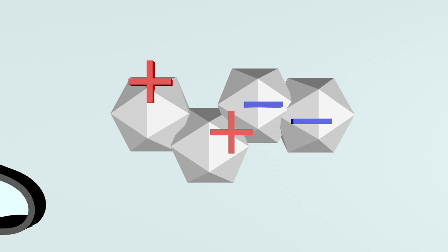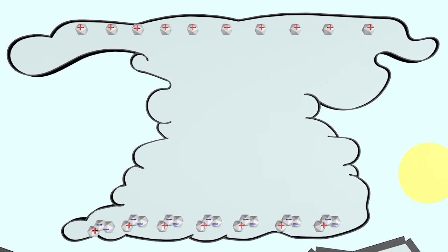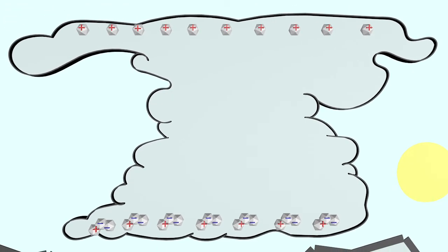As a result, the hail stones are now negatively charged and the small ice crystals are positively charged. This process happens many times, so that the positively charged ice crystals accumulate in the cloud above and negatively charged hailstones in the cloud below.